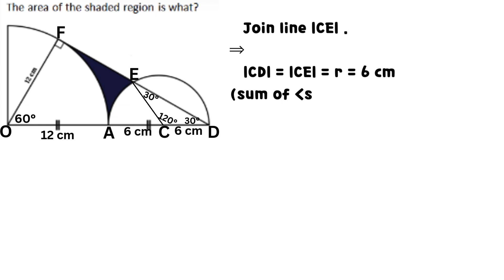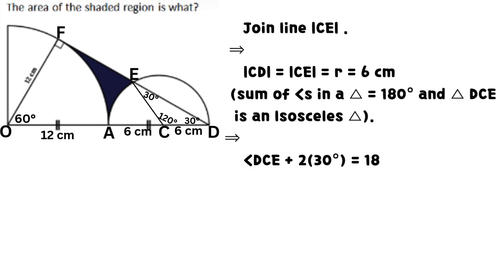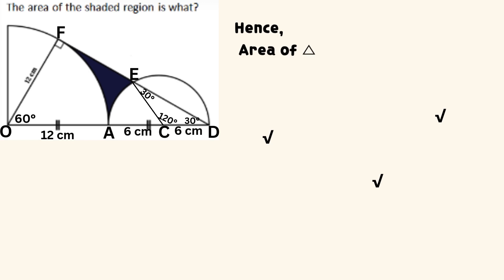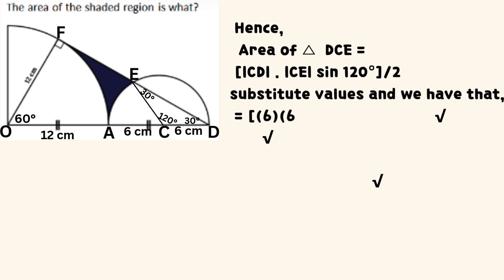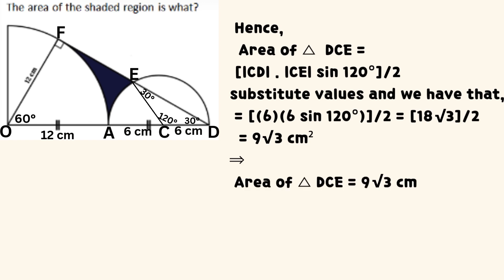Join line CE. It implies that line CD equals line CE, which equals small r, equal to 6 centimeters. The sum of angle DCE and 2 times 30 degrees equals 180 degrees. It follows that angle DCE equals 180 degrees minus 60 degrees, which equals 120 degrees. Hence, area of triangle DCE equals half the product of line CD and line CE times sine 120 degrees, which equals 9 times the square root of 3 square centimeters. We call this equation 2.